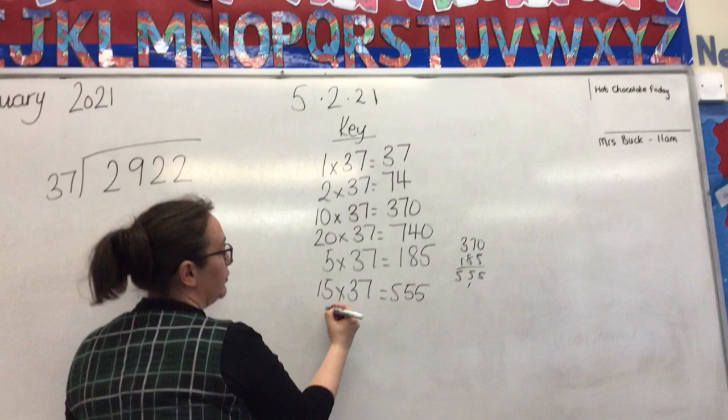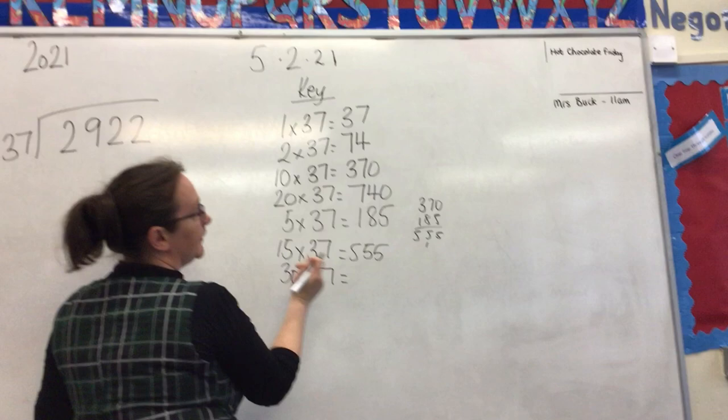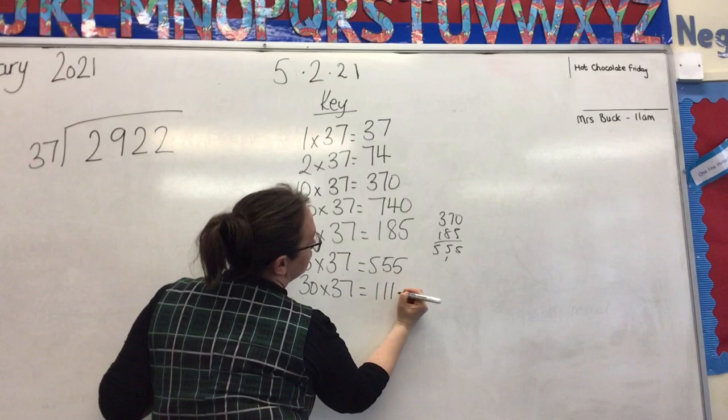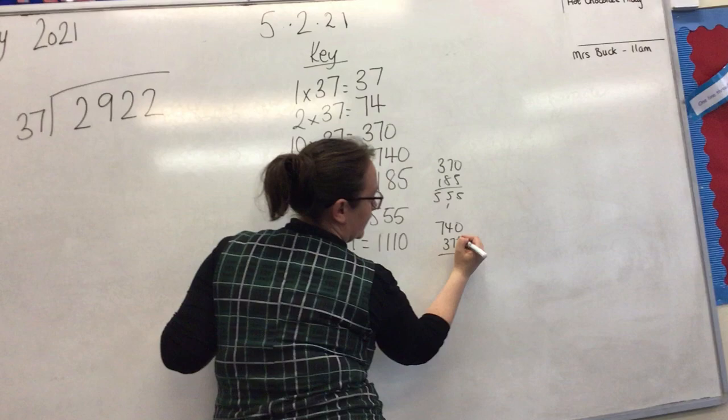I think I'm going to start there now. No, I'll do one more. I'll do 30 times 37. To do that, I can add these two together, so that's 1000, 1040, 1110. I'll just double check that. Yeah, 1110. So I've done my key and I've got the calculation that I need to work out.